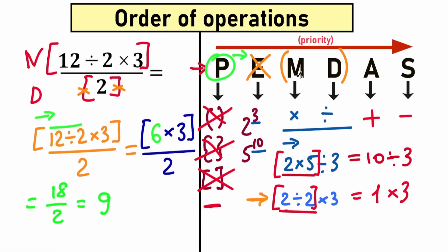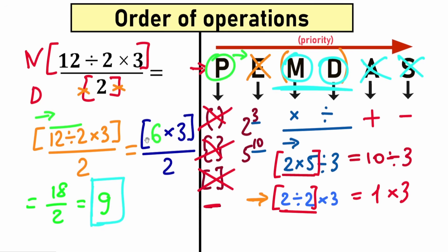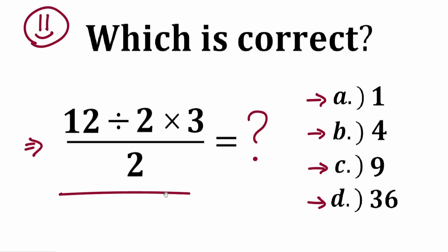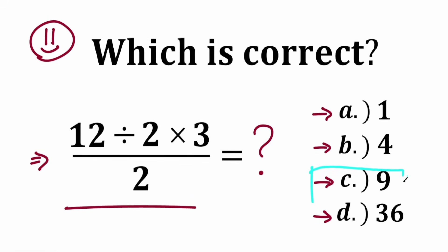In simple words: we have multiplication and division, no addition or subtraction. First we have a grouping symbol — a numerator and denominator. We evaluate the expression in the numerator, which has a mixture of multiplication and division, done strictly from left to right. So our correct answer is 9. This is option C.